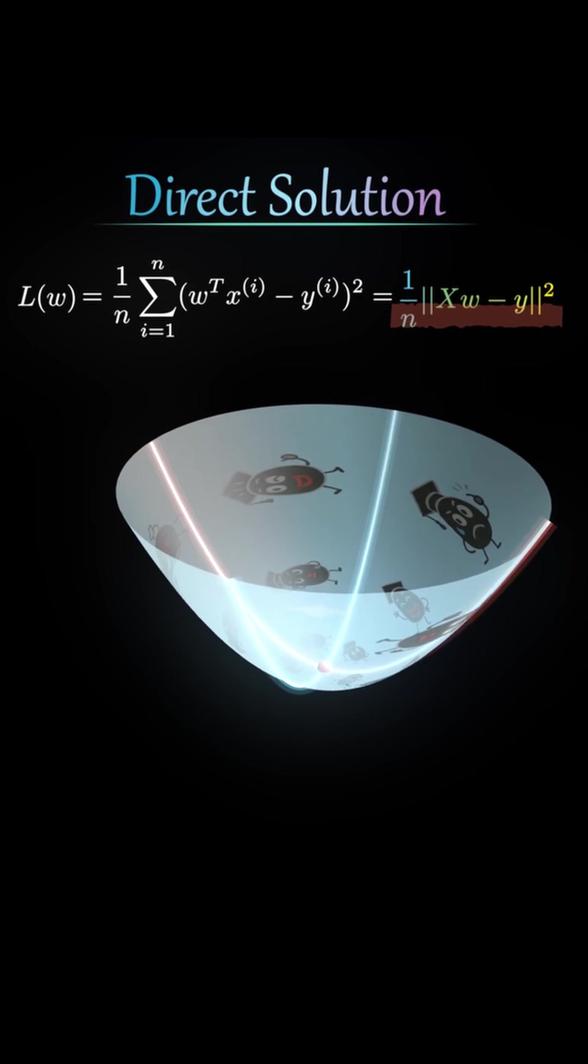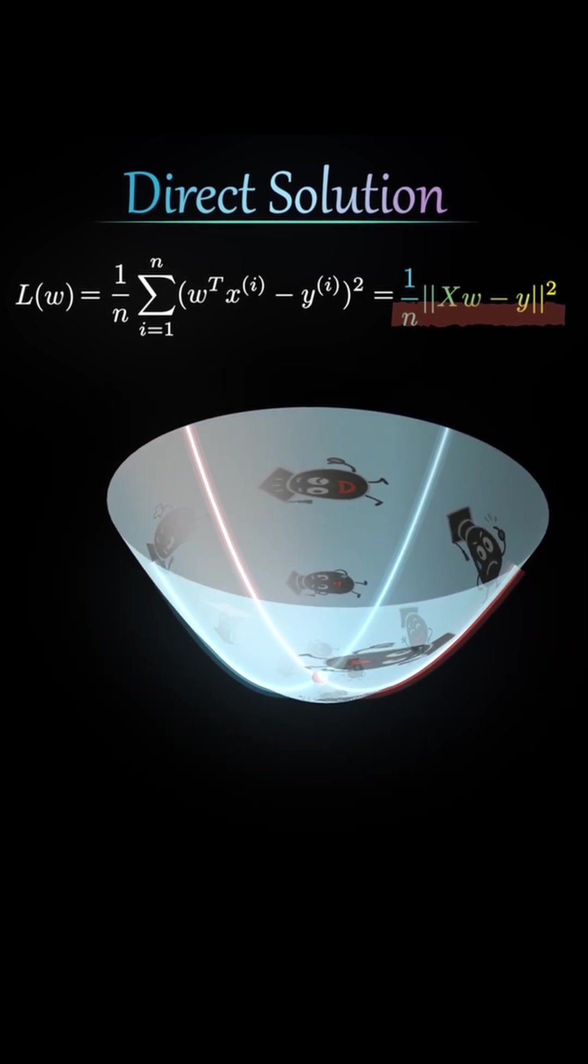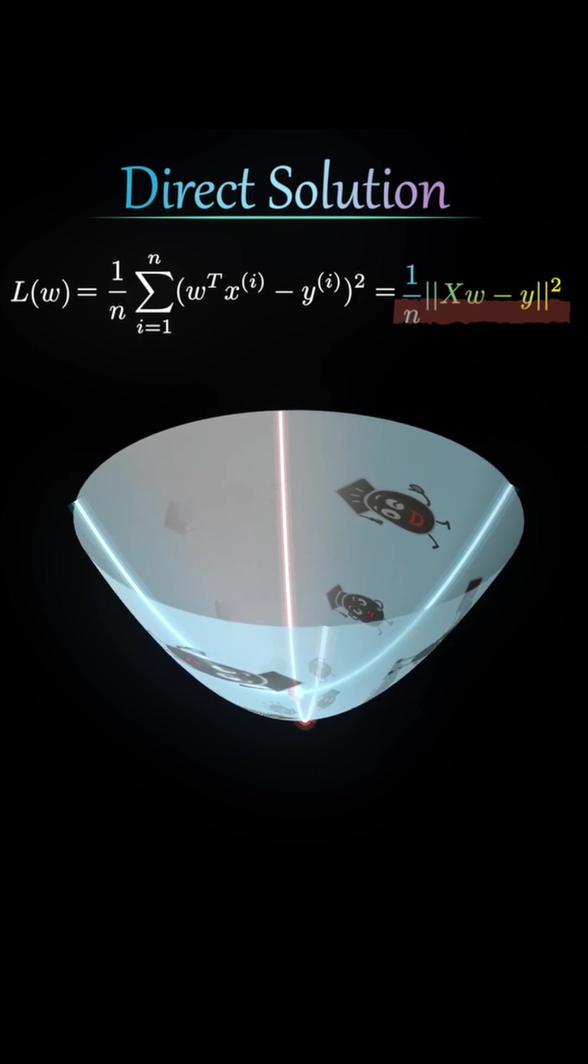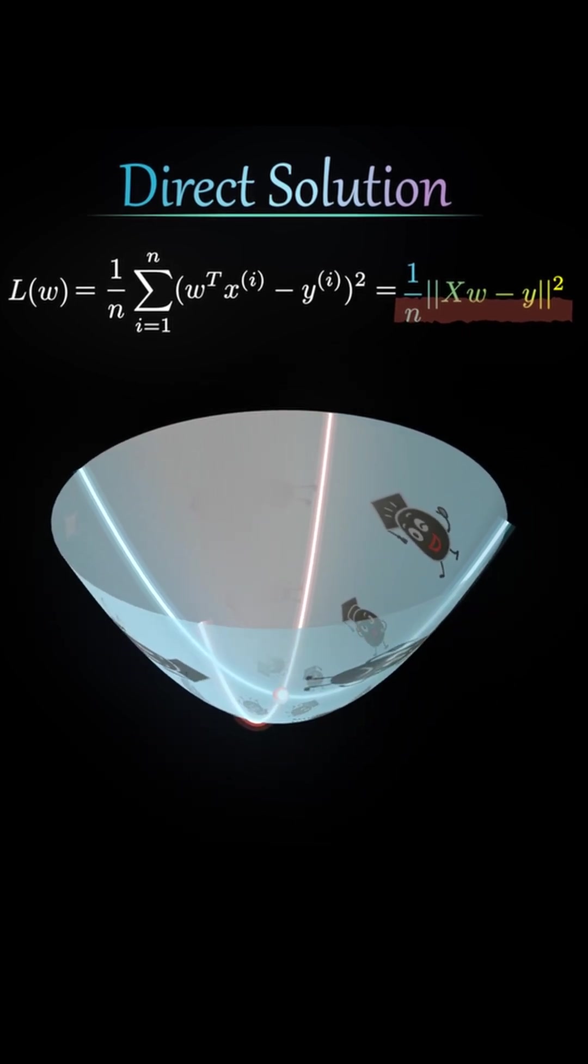Even if w has more than 3 components, L remains convex in every direction. We can actually extend what we learned last time and prove that mathematically.